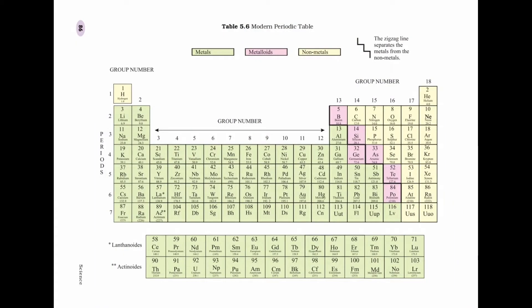Advantages of the modern periodic table: it has made the study of known elements simpler and more systematic. It also helped predict the existence of new elements and helped in understanding the properties of elements. The position of an element indicates whether it is a metal, non-metal, or metalloid. By knowing an element's position, we can predict its atomic number, electronic configuration, valency, properties, and the nature of compounds — ionic or covalent — that it forms.